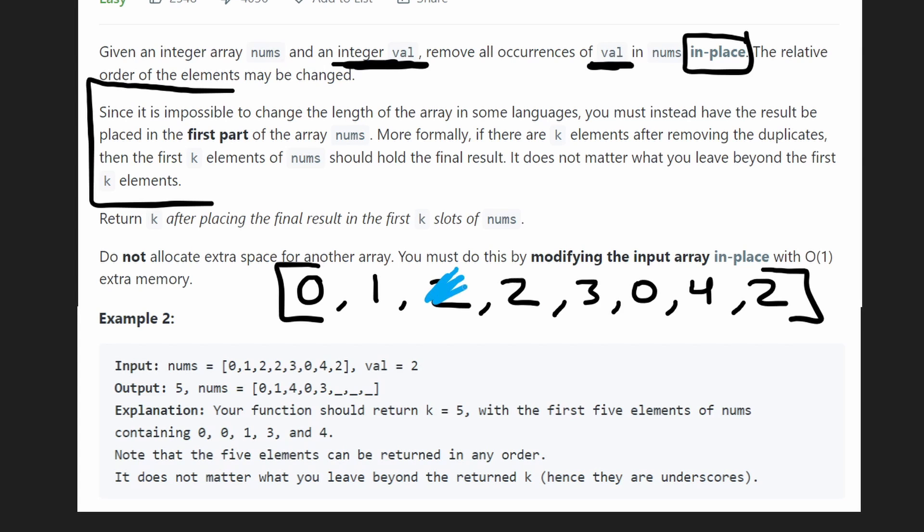So suppose we do that, we replace this with a three and the real three can just stay here for all we care. And then next, we're going to get to a zero. So this is also not a two and we'd want to put this over here. We know there's another two over here. So let's put the zero over here. So basically what we're learning by just going through this example is it might be very helpful for us to keep a pointer, you know, let's call it K or let's call it I or whatever you want to call it. A special pointer basically telling us next time we find a non two value like three, zero, four, where should we put it?